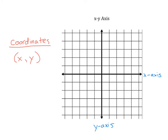On the XY axis, these numbers represent your x values, but this middle part is actually where we start. This middle point right in the center has a specific name — it's called the origin. We call it the origin because both x and y are zero, and origin means starting point. So this is our starting point.